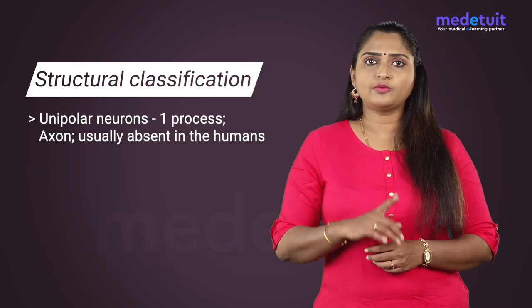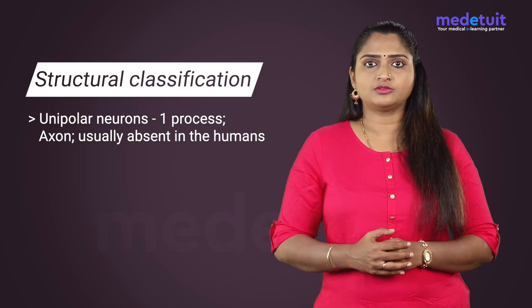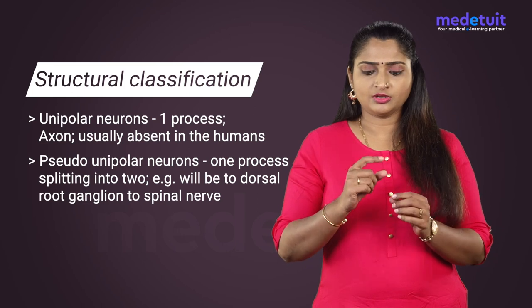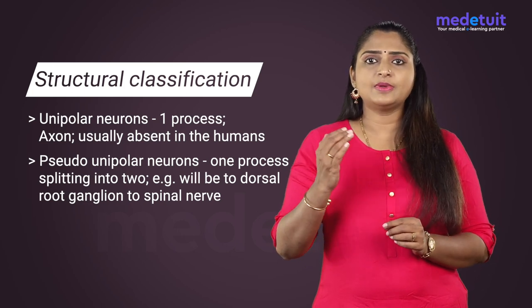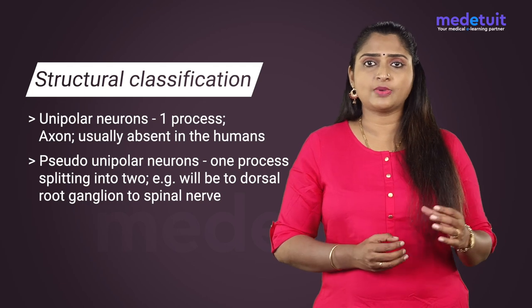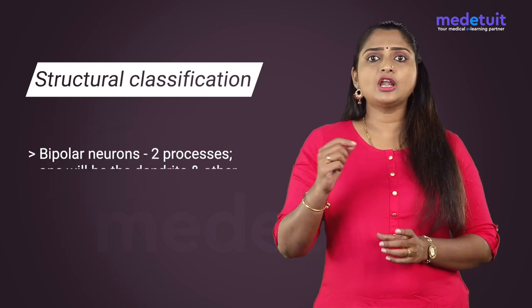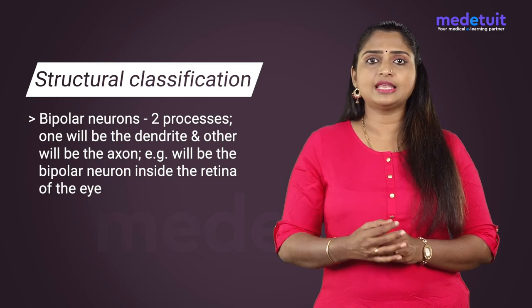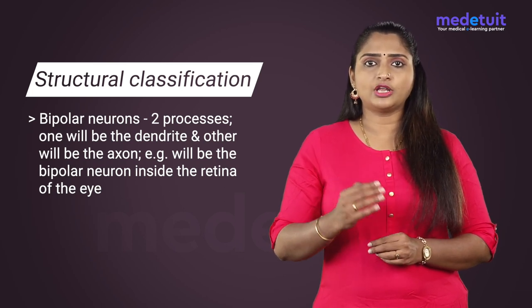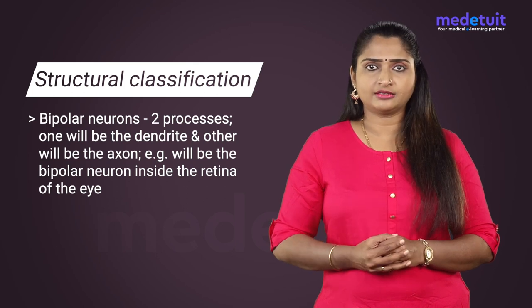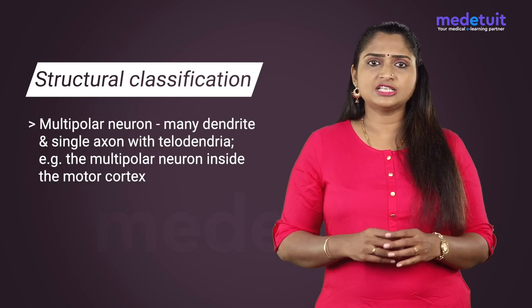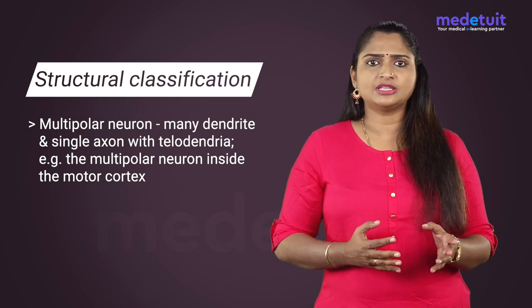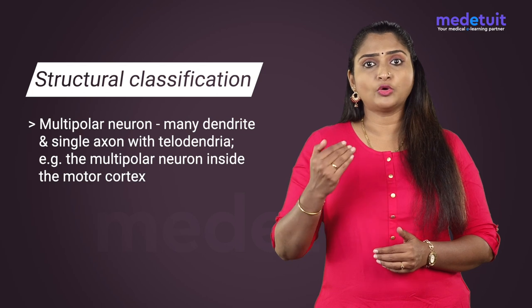Unipolar neurons have only one process, that is the axon, and are usually absent in humans. Pseudo-unipolar neurons have one process which actually splits into two; the best example is the dorsal root ganglion of the spinal nerve. Bipolar neurons have two processes — one dendrite and one axon — the best example being the bipolar neuron inside the retina of the eye. Multipolar neurons have many dendrites and a single axon with telodendria; the example is the multipolar neuron inside the motor cortex.